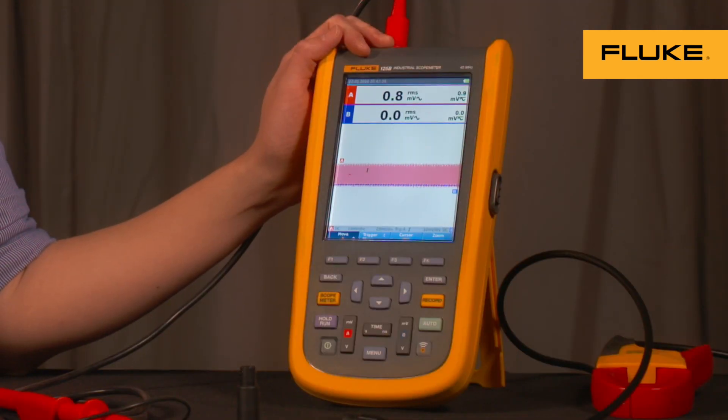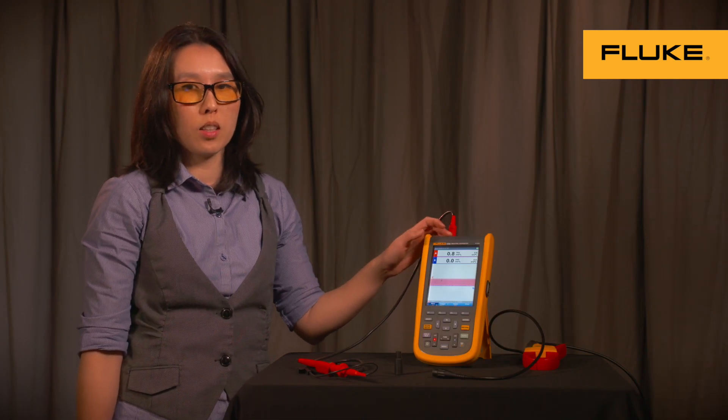The 125B industrial scope meter has the power and harmonics mode, which offers single-phase power measurements with waveform and harmonics display. To get started, let's take a look at the probes required to perform the power and harmonics measurements.